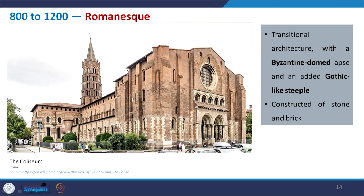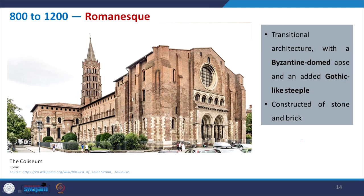Romanesque architecture adds to the Byzantine dome the Gothic-like steeple. This structure is added to it, and the scale changes slightly — somewhat reduced. Along with that, they create some additional support to the structure. Again, stone and brick are used, and it is a load-bearing structure constructed during this phase.